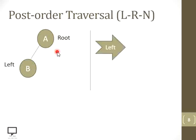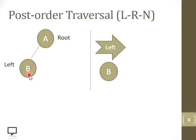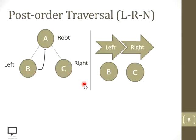After reaching the left child, we process it. Then we move to the right child, but first we must return back to the root node. From the root node we then move to the right child, process it, and then return back to the root node to process it last.